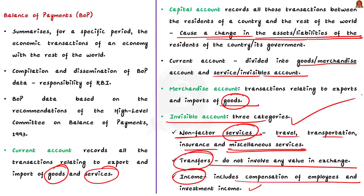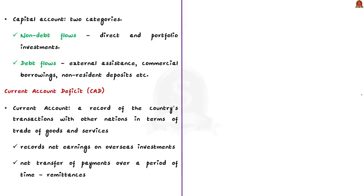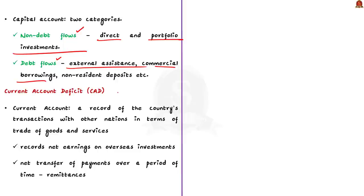Coming to the capital account, it can be broken up into two categories. First is non-debt flows like direct and portfolio investments. Second is debt flows like external assistance, commercial borrowings, and non-resident deposits. The sum of current account and capital account indicates the overall balance, which could either be in surplus or in deficit. The movement in the overall balance is reflected in changes in the international reserves of the country.